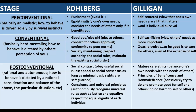Gilligan was Kohlberg's student and she thought that the way he laid this out privileged men, and essentially could lead to the conclusion that men are more capable of a full moral life than women. In Gilligan's version, the pre-conventional stage is one where people are self-centered — the view that one's own needs are all that matter and the goal is individual survival.